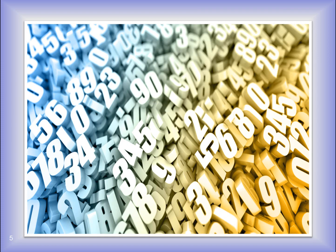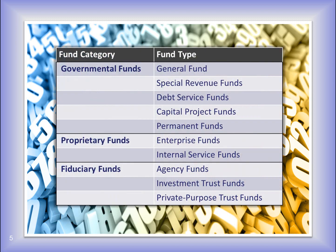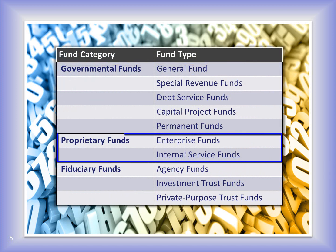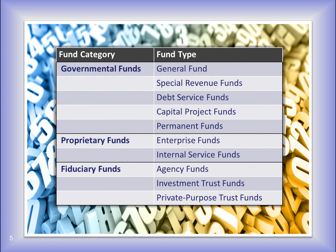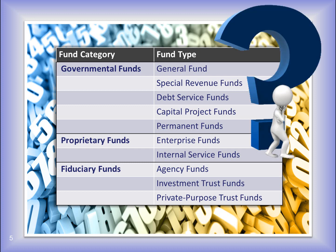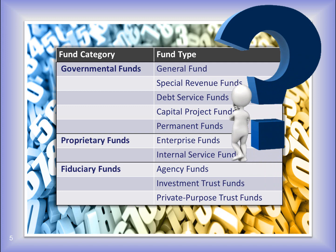Fund numbers are assigned based on fund type. There are three categories of funds: Governmental, Proprietary, and Fiduciary. Within each of these categories are more specific fund types. Within fund types are fund numbers and names that are unique to Village, Township, and Libraries. It's important for you to understand the different categories and types of funds. They have different functions and restrictions.